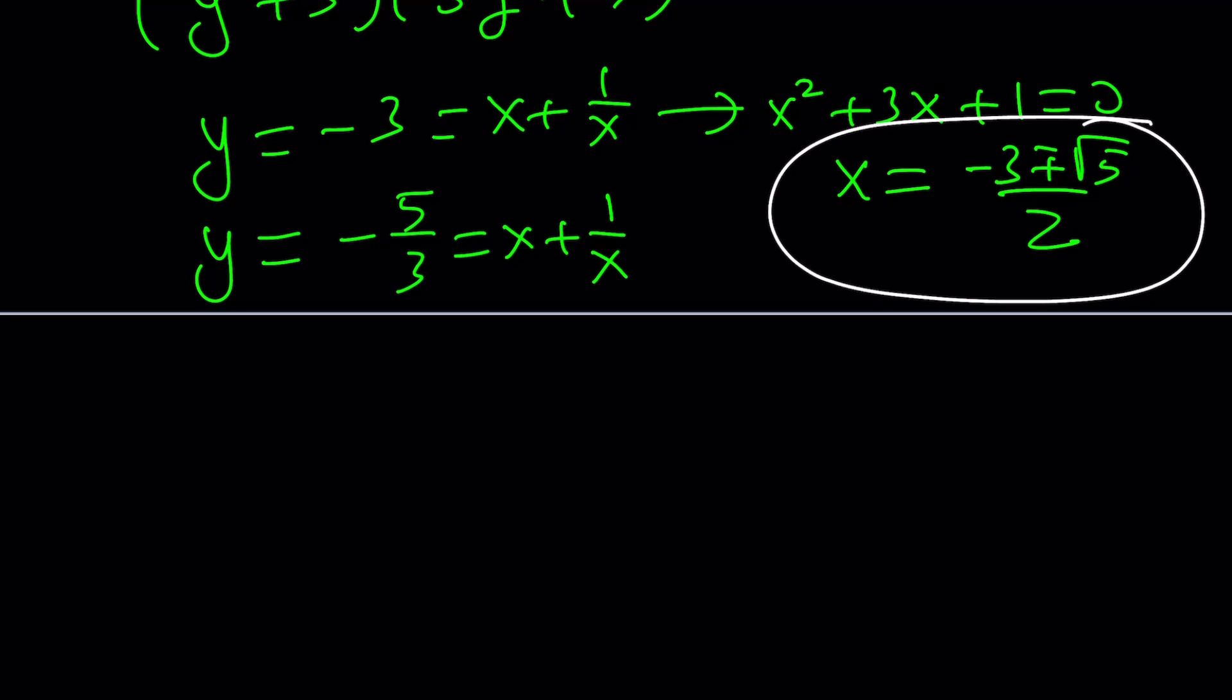Now, here, though, you're not going to get real solutions because your equation is going to be like 3x squared plus 5x plus 3 equals 0. And the x values from here are going to be negative 5 plus minus the square root of 11i divided by 6.